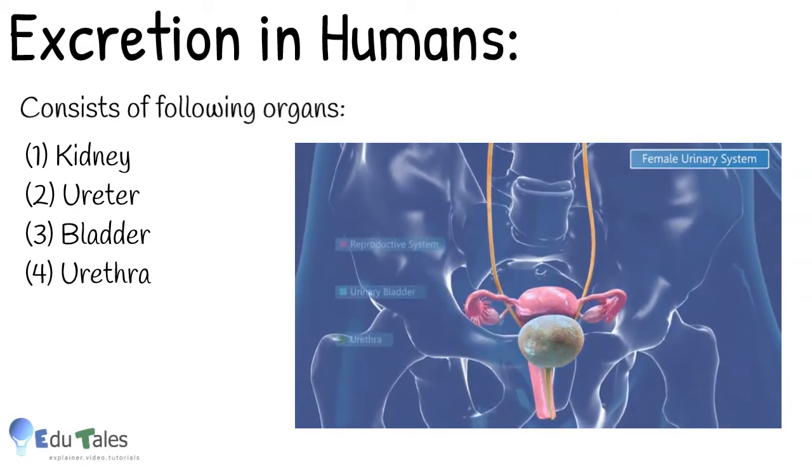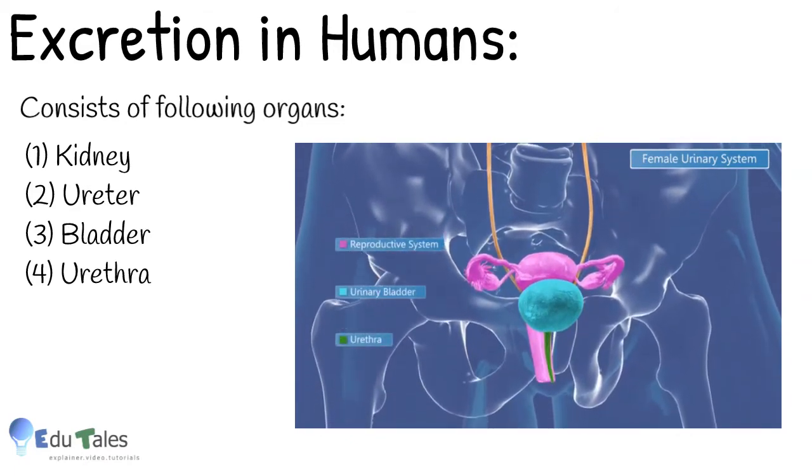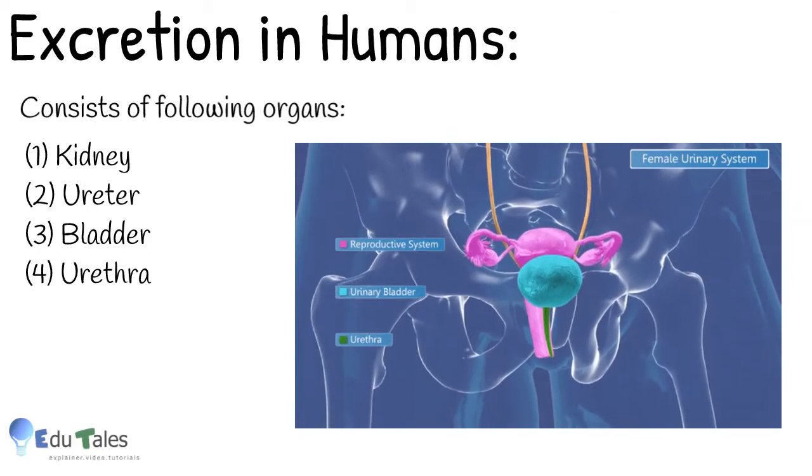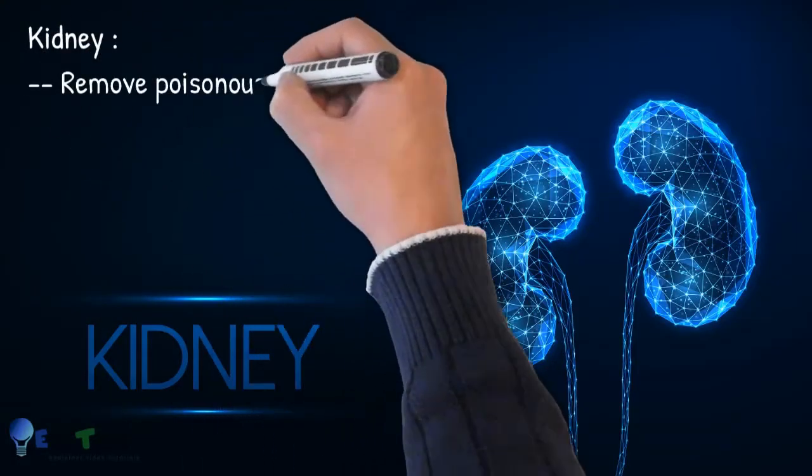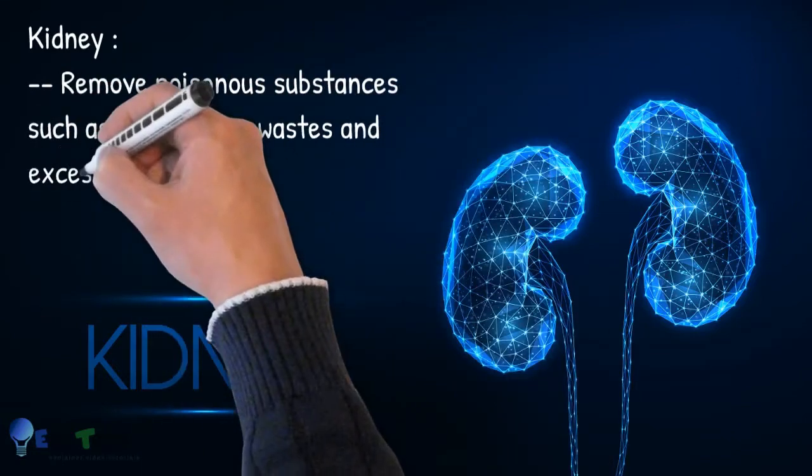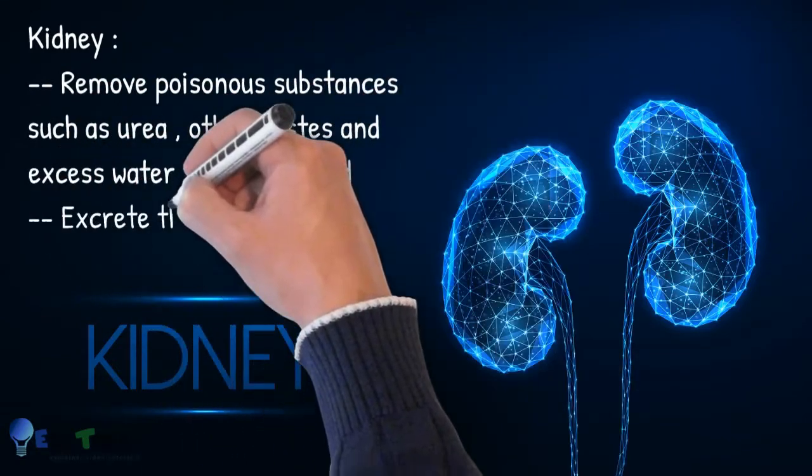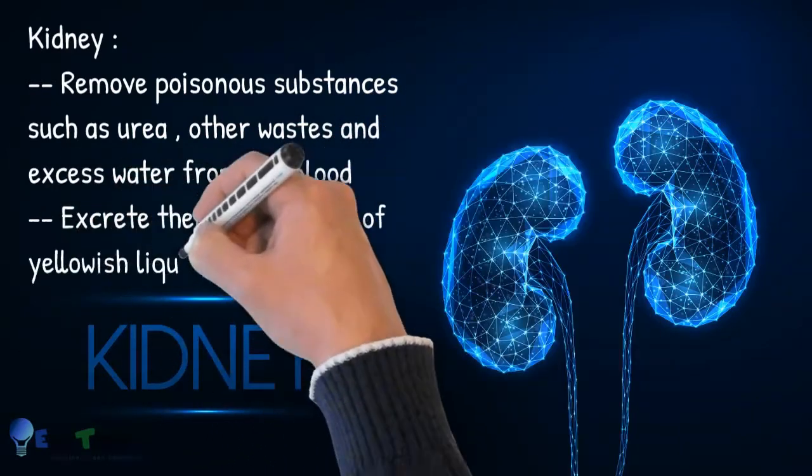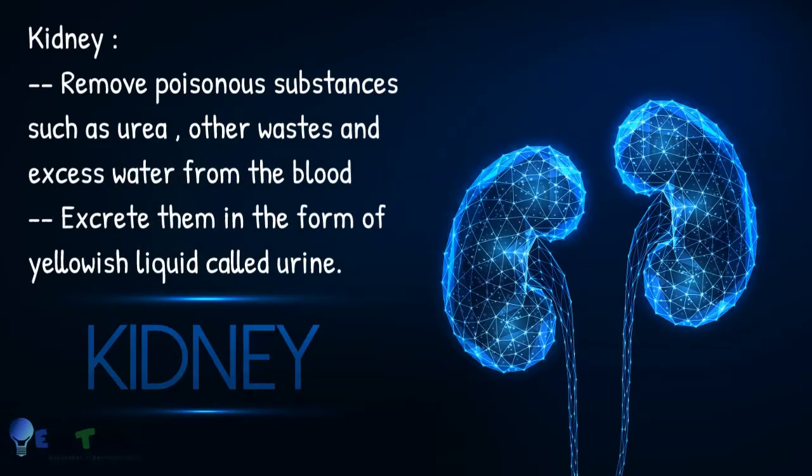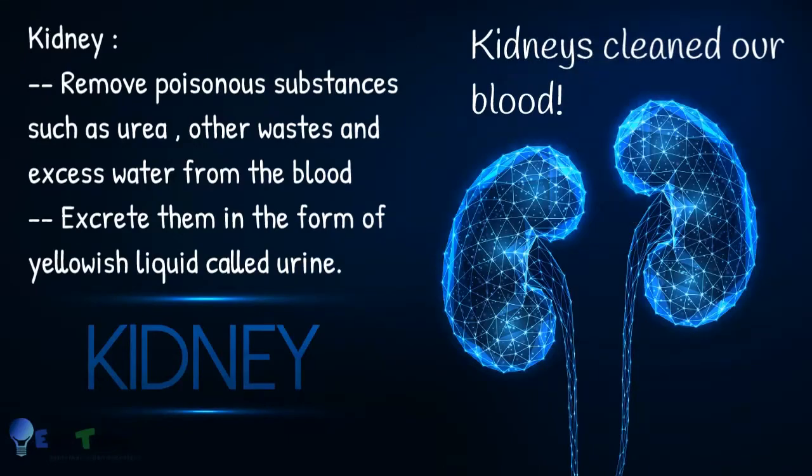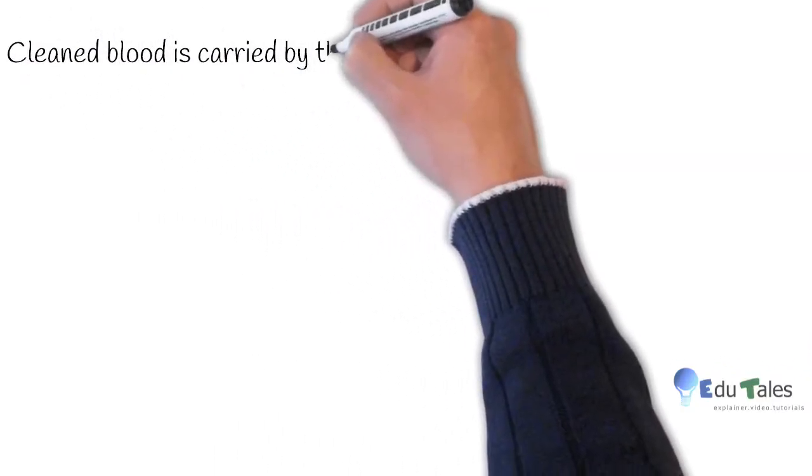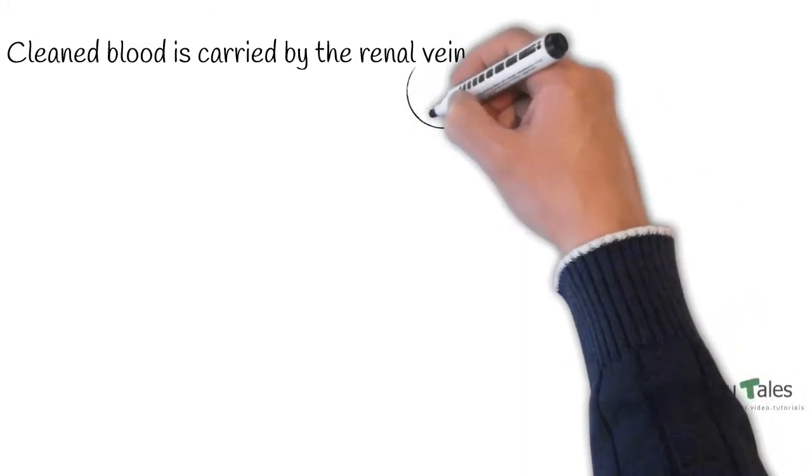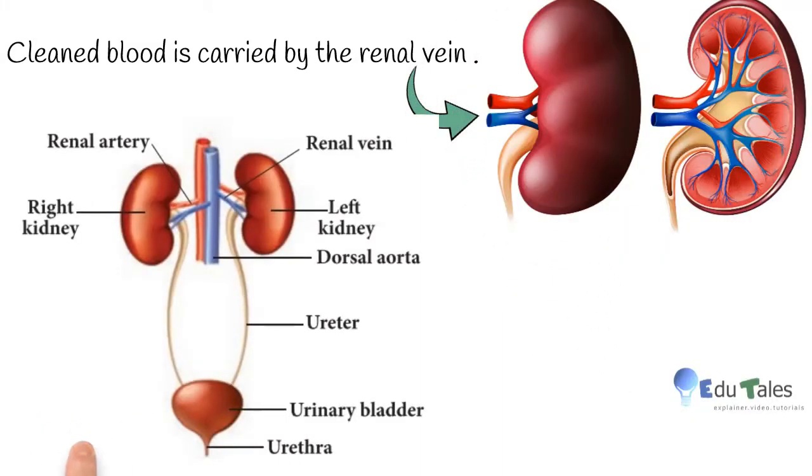So what does kidney do? They remove poisonous substances such as urea, other wastes, and water from the blood, and finally they excrete them in the form of yellowish liquid called urine. So basically it cleans our blood, and the cleaned blood is returned back by the renal vein.